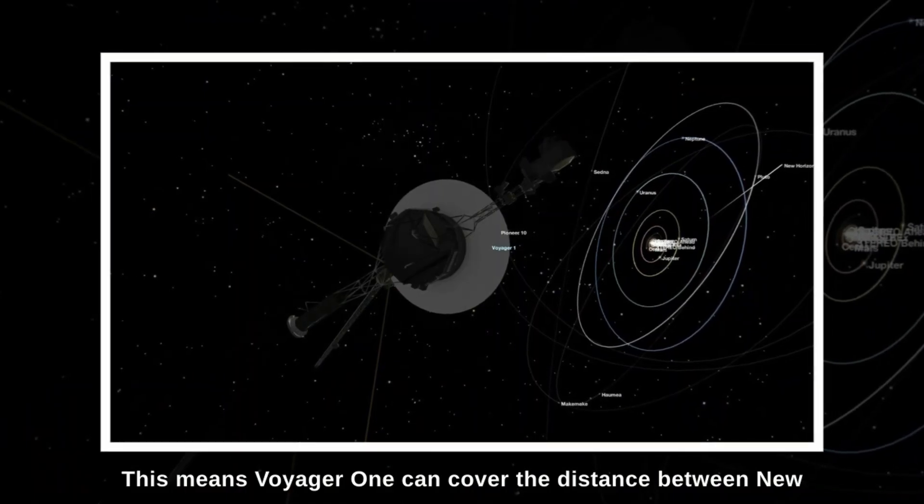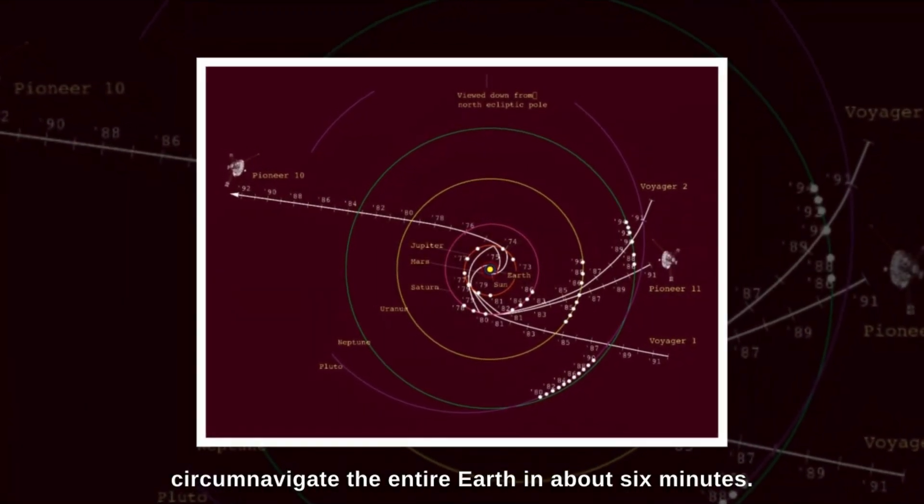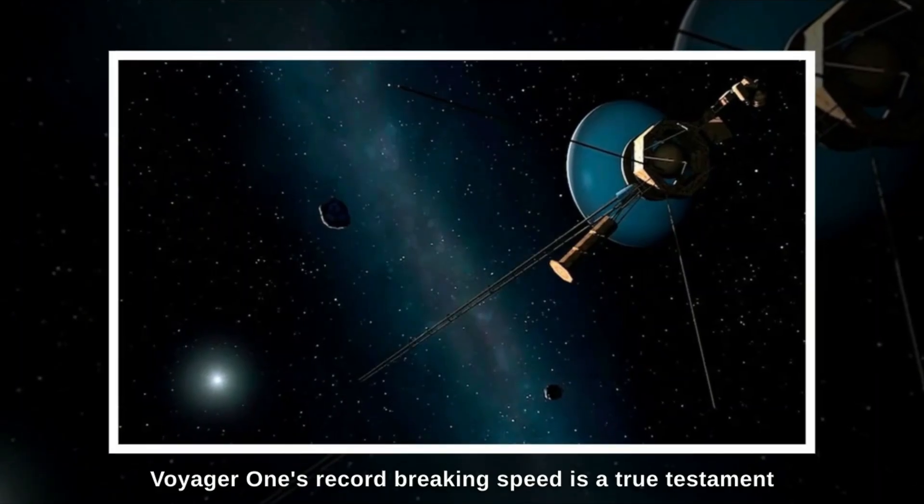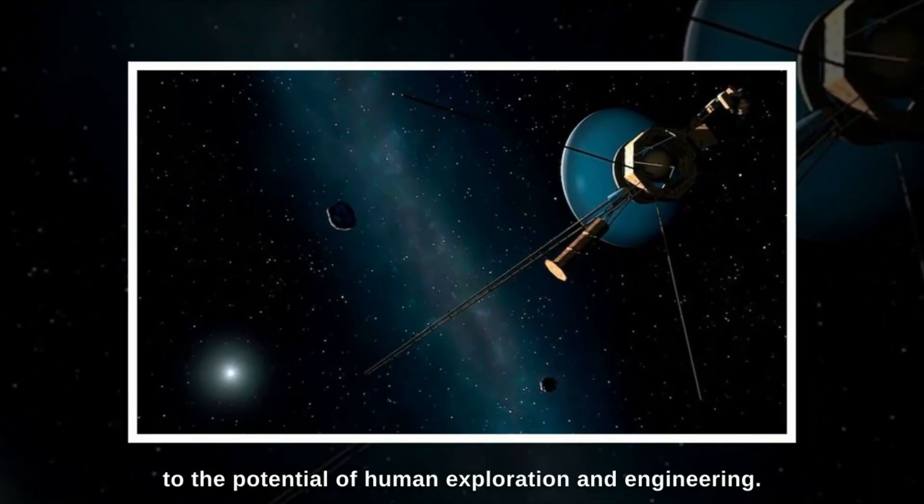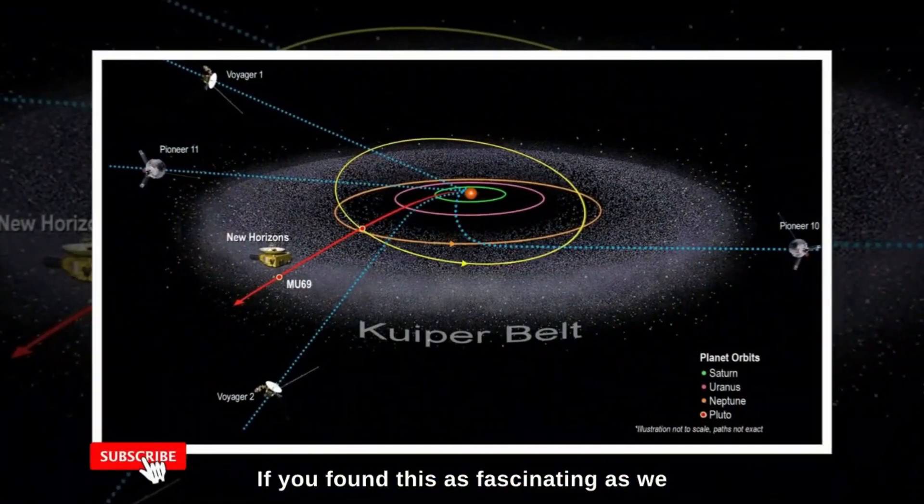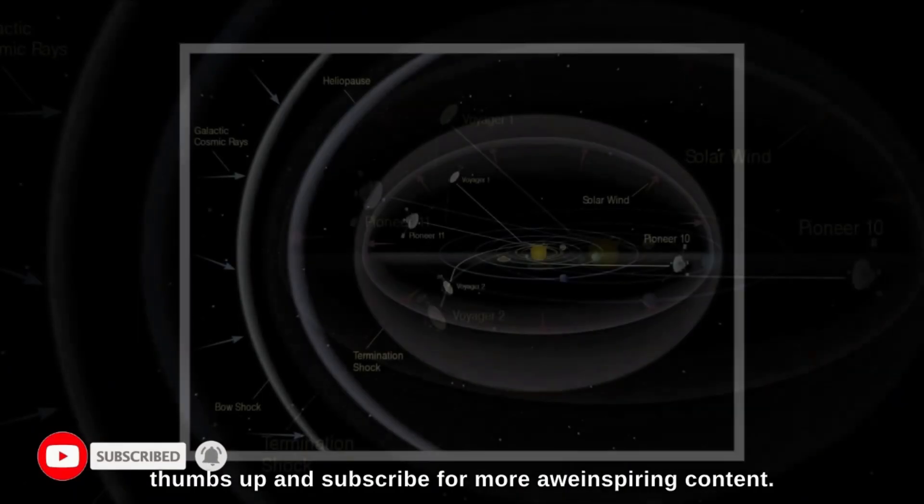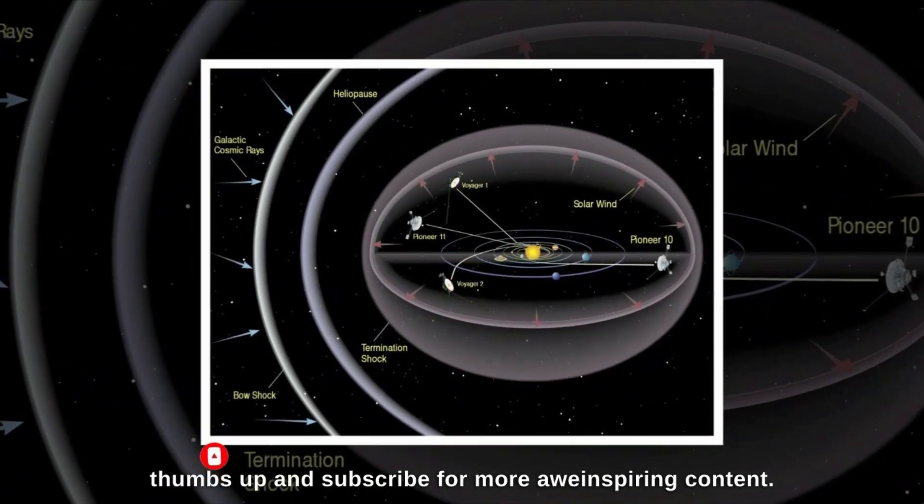To put that into perspective, this means Voyager 1 can cover the distance between New York and Los Angeles in just a few minutes, or circumnavigate the entire Earth in about six minutes. Voyager 1's record-breaking speed is a true testament to the potential of human exploration and engineering. If you found this as fascinating as we do, don't forget to give this video a thumbs up and subscribe for more awe-inspiring content.